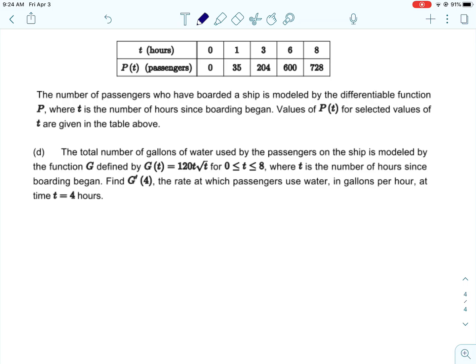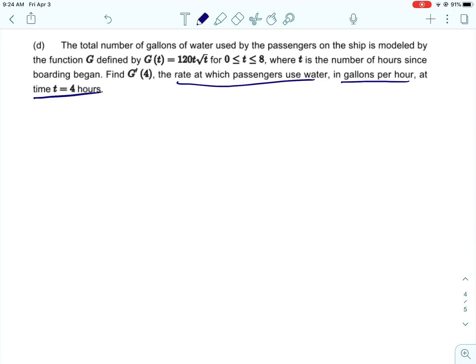Okay, so we have a new function. The total number of gallons of water used by the passengers on the ship is modeled by g. And g is this function. It's not too crazy. And t is number of hours since boarding began. And we are going to find g prime of four, which is the rate at which passengers use water in gallons per hour. Now later, pretty soon, I guess a couple units away from this one, you will have to tell what g prime represents. So we'll come back to that and review it. But hopefully you do remember that.